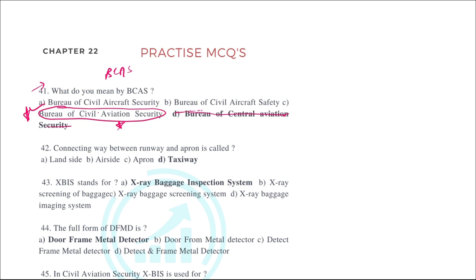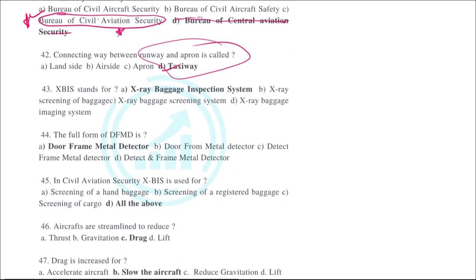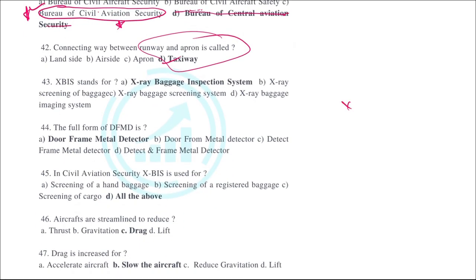The taxiway connects the runway and the apron. XBIS stands for X-ray Baggage Inspection System. Baggage is screened and checked for the presence of metals and explosives using this system.